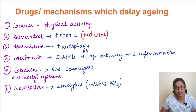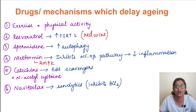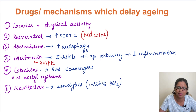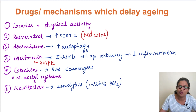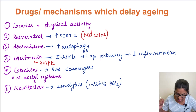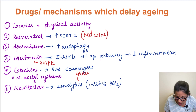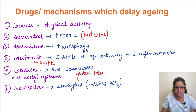Metformin, as we all know, is one of the drugs used for diabetes mellitus treatment — it acts on the AMP kinase pathway. Metformin also has another activity: it inhibits a pathway called NF-κB. The NF-κB pathway is involved in production of inflammatory cytokines and inflammatory mediators. When this pathway is inhibited, inflammatory cells are not recruited, inflammation decreases, and the harmful effects of free radicals are reduced. Next, catechins and N-acetylcysteine — catechins are present in green tea and are antioxidants that scavenge free radicals.